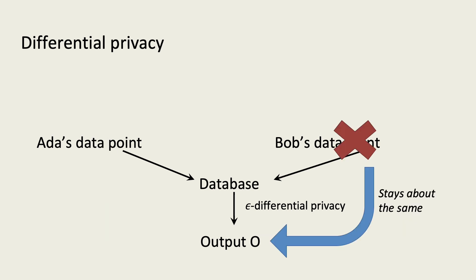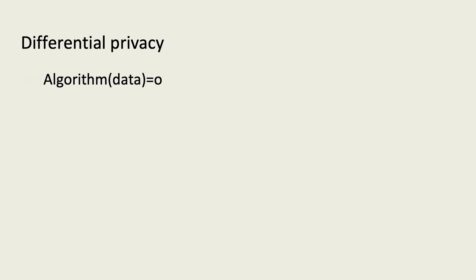In more detail, differential privacy is a property that can hold of an algorithm. The algorithm consumes a set of data points and produces some output. Intuitively, the algorithm computes some statistic of the data set, such as the number of people with some disease. However, to have differential privacy, the algorithm must be randomized.